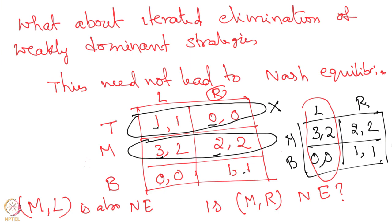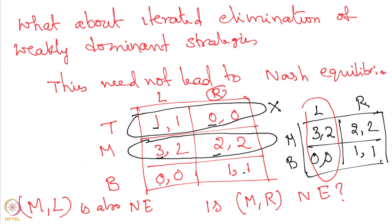However, (M, L) is also a Nash equilibrium. So what is really happening? The order in which you eliminate strategies matters a lot — it determines which equilibrium you arrive at. This example shows that the order of elimination under weak dominance is very important. This is an interesting example, and everyone is asked to construct an example where iterated elimination of weakly dominant strategies does not lead to a Nash equilibrium at all.